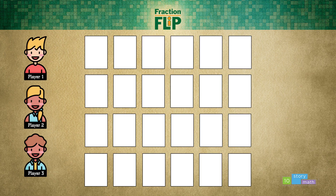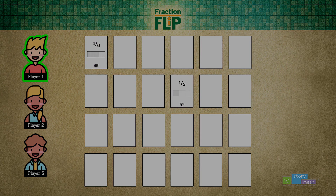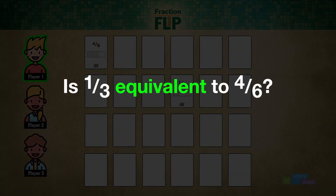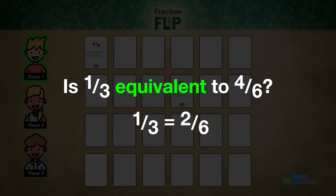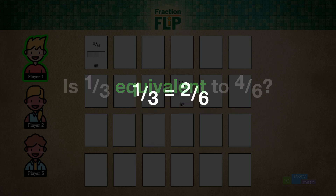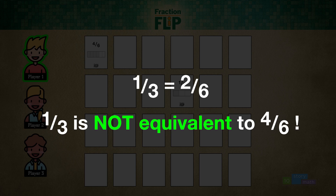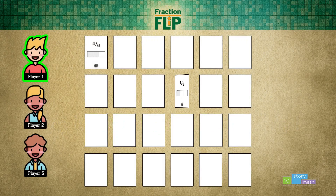Start the game by picking one player to go first. The first player flips over two cards: four-sixths and one-third. They ask themselves, are those fractions equivalent? They think to themselves, what are the nicknames for one-third? One-third, two-sixths. Nope — one-third is not equivalent to four-sixths. So, they flip the cards back over. Now it's the next player's turn.